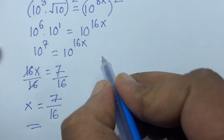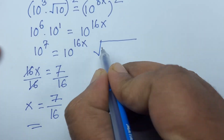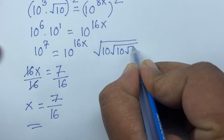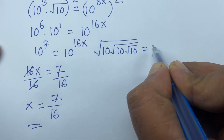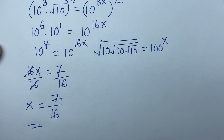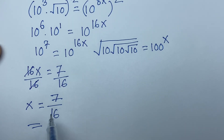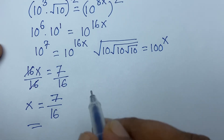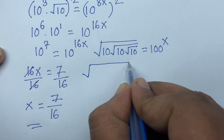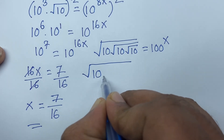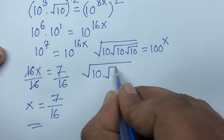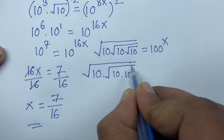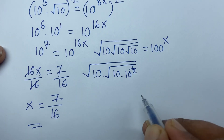Let's check: our question is square root of 10 times square root of 10 times square root of 10 is equal to 100 to the power x, and we found x is equal to 7 over 16. Now I can see the square root of 10 is 10 to the power half.